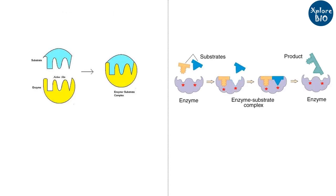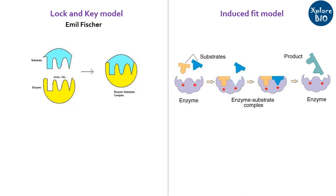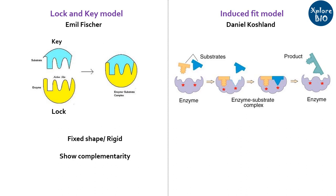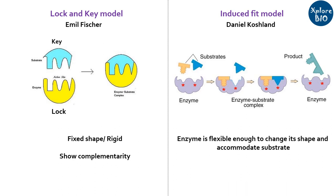There are basically two models for enzyme-substrate binding and enzyme action: the lock and key model and the induced fit model. The lock and key model was proposed by Emil Fischer, according to which both the substrate and enzyme have a rigid and fixed shape. The key, which is the substrate, fits into the active site of the lock, which is the enzyme, and forms a product — thus the substrate and enzyme must have complementarity in structure. The second model is the induced fit model, proposed by Daniel Koshland, which says that when a substrate is about to bind the enzyme, it brings about a conformational change in the active site of the enzyme. Thus this model is more flexible.